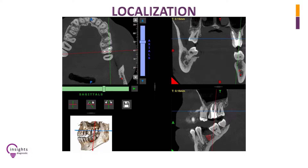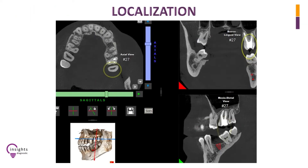Notice now the appearance of each root of tooth 2-7. This is now the localized view of tooth 2-7 showing the mesio-buckle, dysto-buckle, and palatal roots.